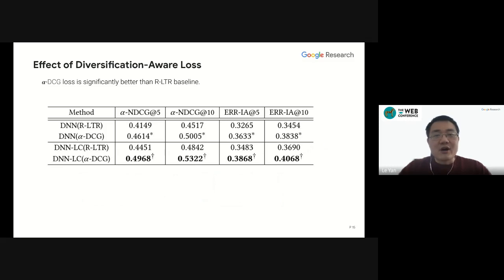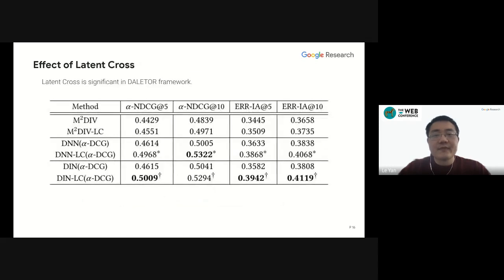When the loss is changed to RLTR, which is a diversification loss but not in our soft next document approximation, we see a significant drop in all the diversification metrics. And similarly, when the latent cross between the query and document is removed, the diversification performance also drops significantly in our DILETTO framework. Interestingly, M-squared DIV is a method also based on distributed representations, and when the latent cross is applied, we see some improvement in terms of diversification metrics, but we don't see statistically significant difference of using this latent cross in M-squared DIV compared to the strong improvement of latent cross in our DILETTO framework.